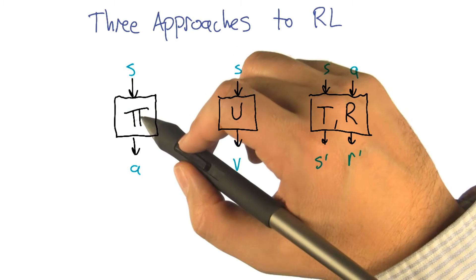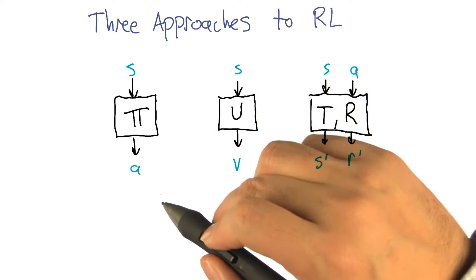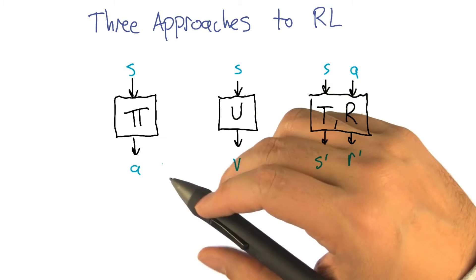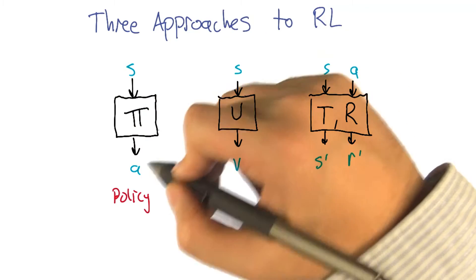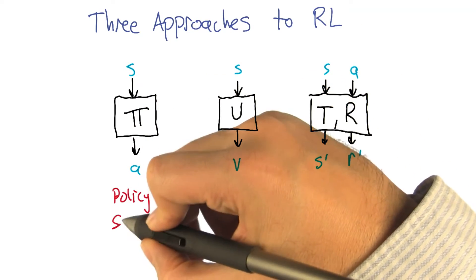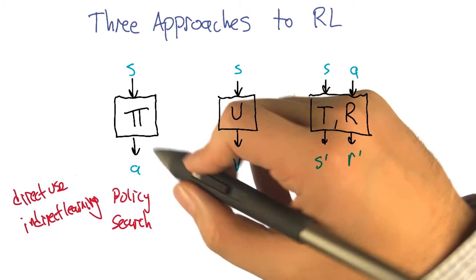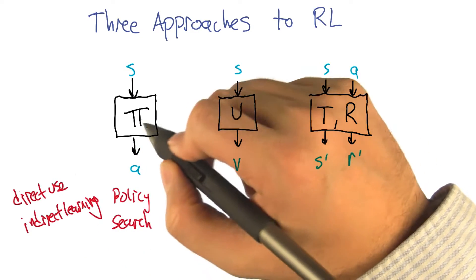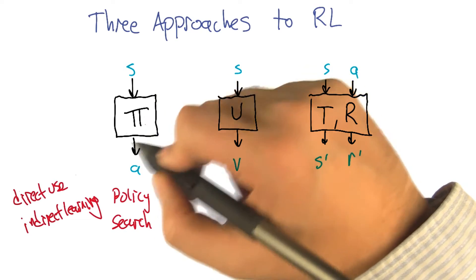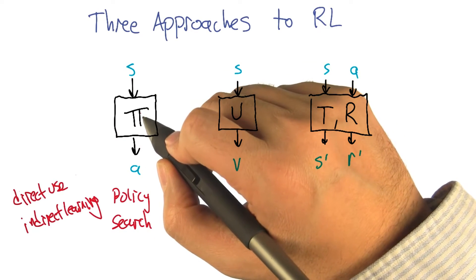So this first box here, pi, maps states to actions. And what did you call this, Charles? A policy. That's right. And reinforcement learning algorithms that work directly on trying to find the policy are called policy search algorithms. So the good thing about policy search is you're learning the quantity that you directly need to use. You're learning the policy that's supposed to be the output. So that seems like a really good thing.